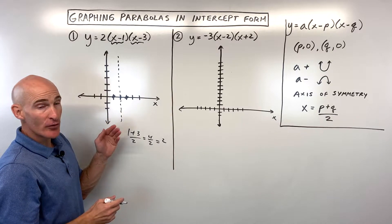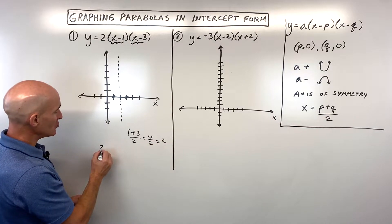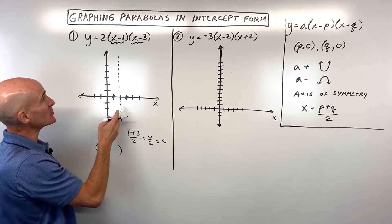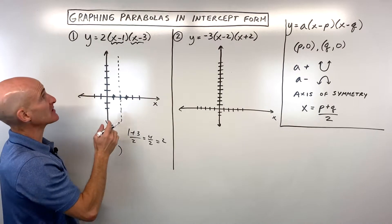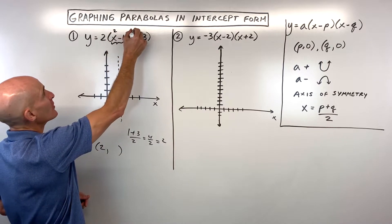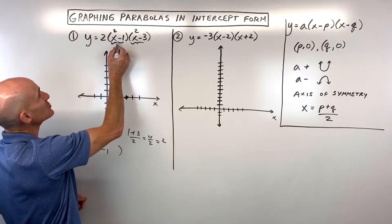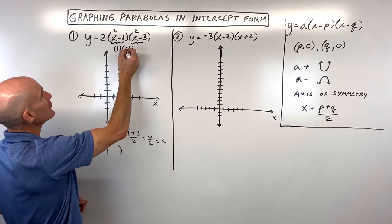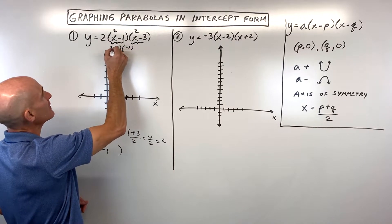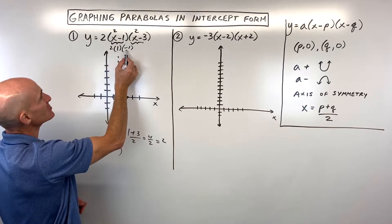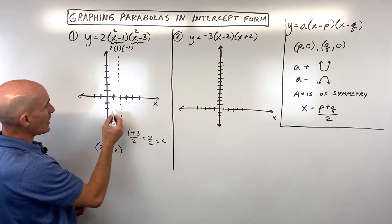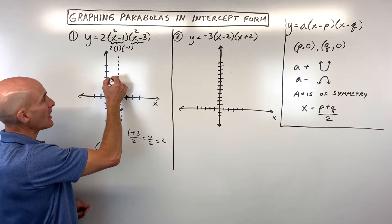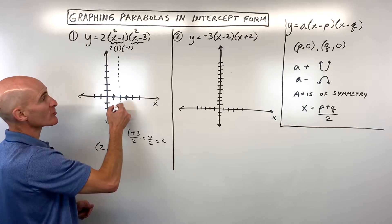To find the vertex, take that x-coordinate of two — which lies on the axis of symmetry — and plug it back in for x. Plugging in two: two minus one is one, two minus three is negative one, times two gives negative two. So the vertex is at (2, -2), giving a pretty good sketch of the graph.